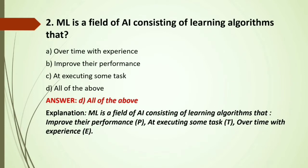MCQ: ML is a field of AI consisting of learning algorithms that — options include: over time improve performance at executing some tasks, or all of the above. All three options A, B, C are correct, as these things are under the well-posed learning problems. Answer: All of the above.